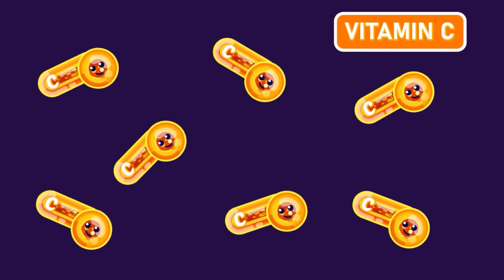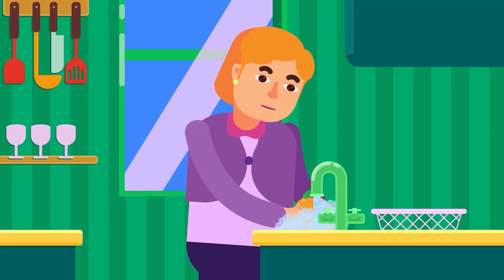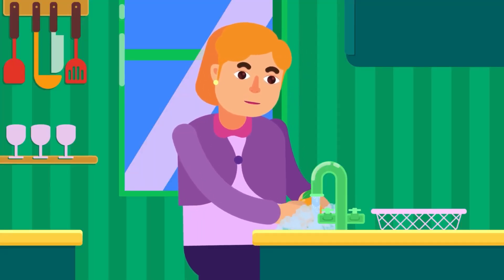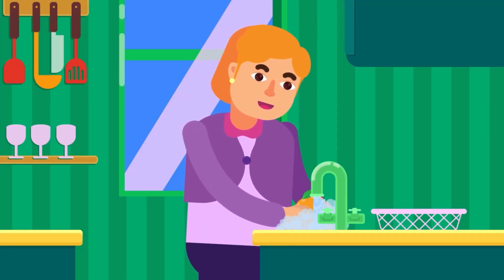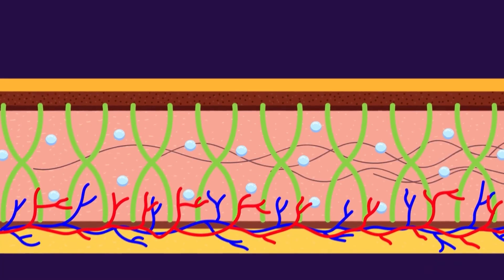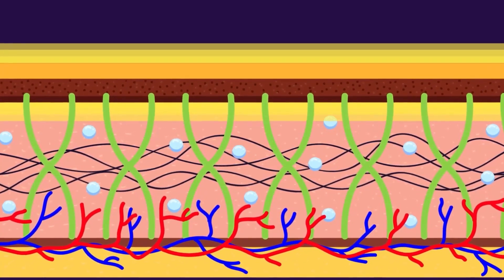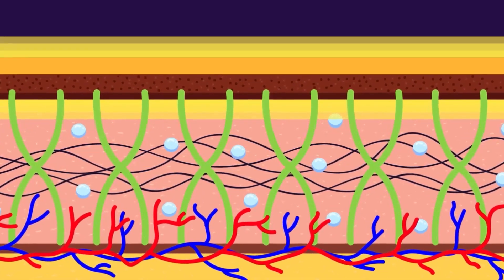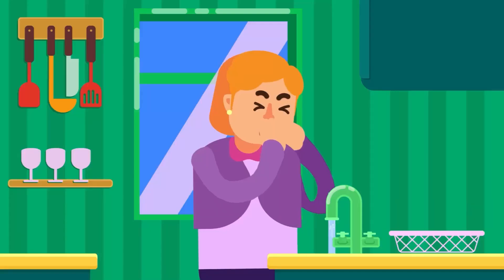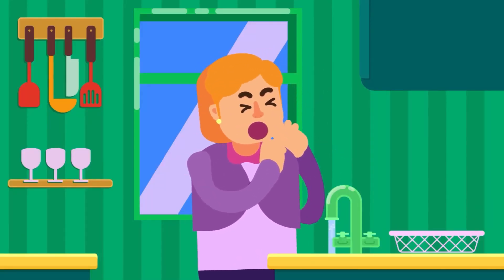Vitamin C, or ascorbic acid, is a water-soluble vitamin needed for the synthesis of intercellular substances — substances found between the cells that keep the cells together. Vitamin C is also necessary for maintaining healthy epithelial tissues. It is, however, not effective against influenza according to popular belief.